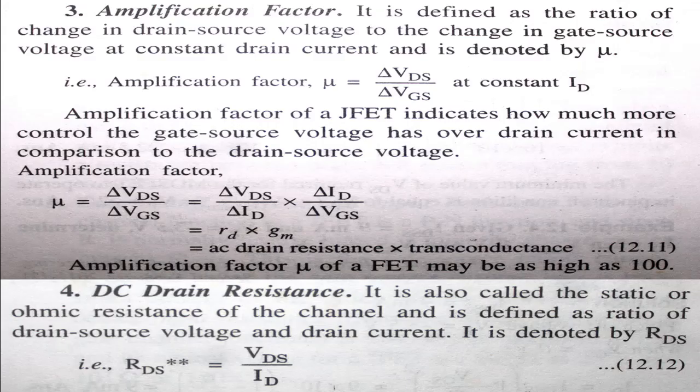Amplification factor is defined as the ratio of change in drain-source voltage to the change in gate-source voltage. It is denoted by symbol mu (μ), where μ = ΔV_DS / ΔV_GS at constant drain current ID.